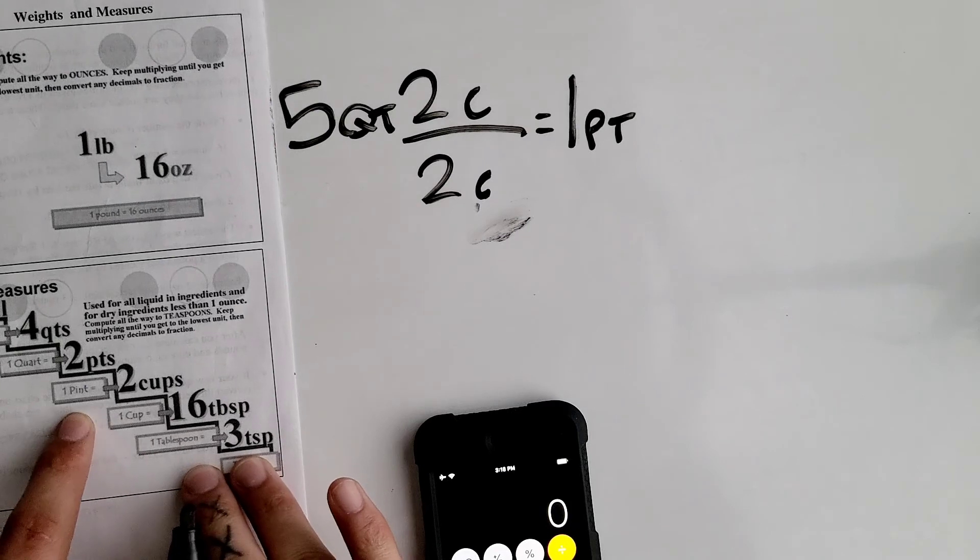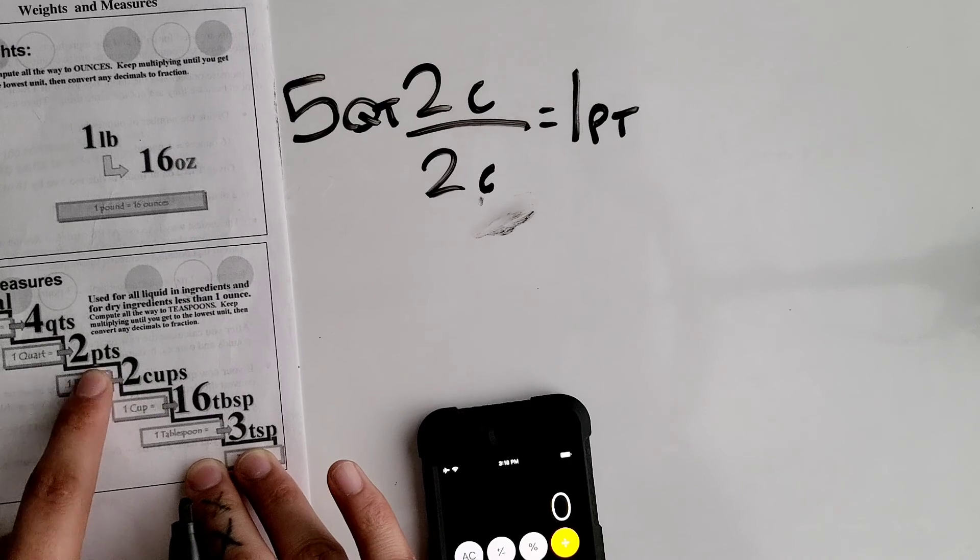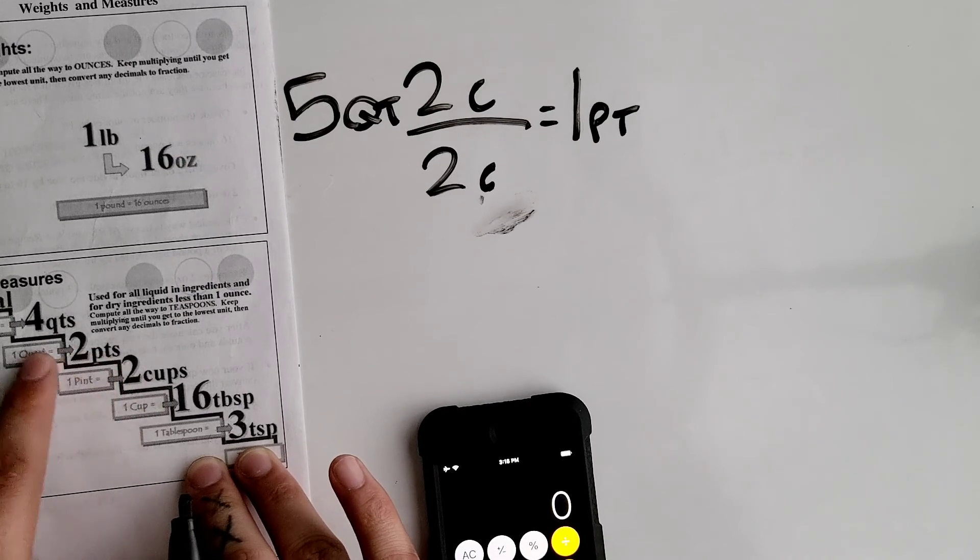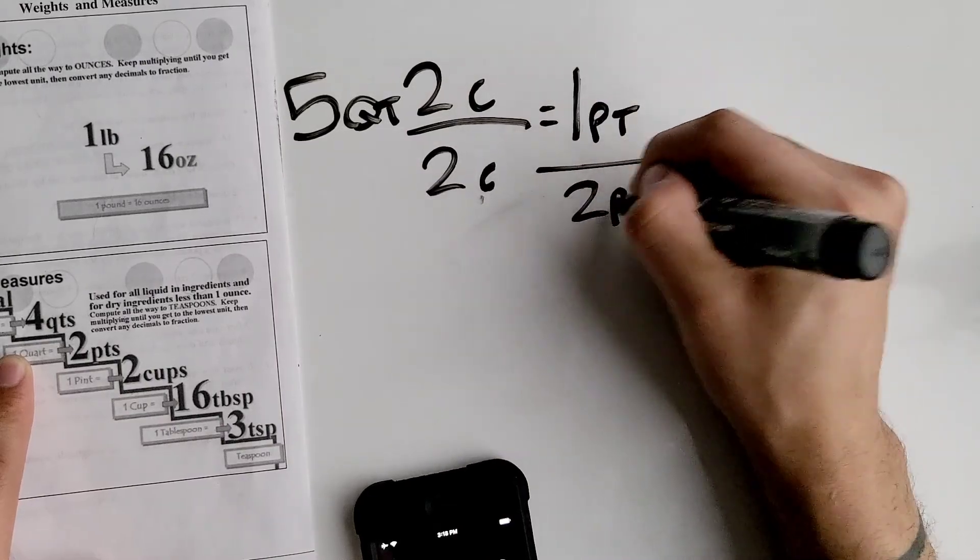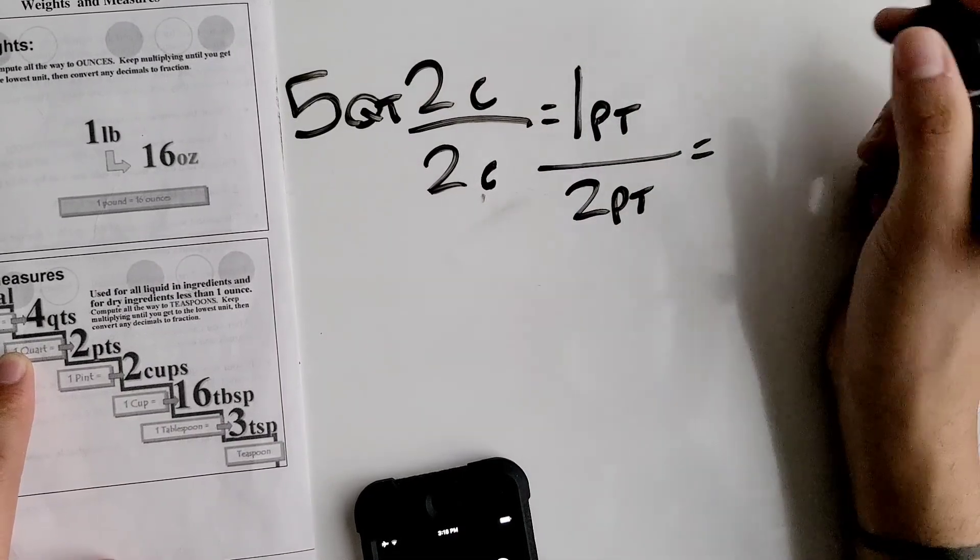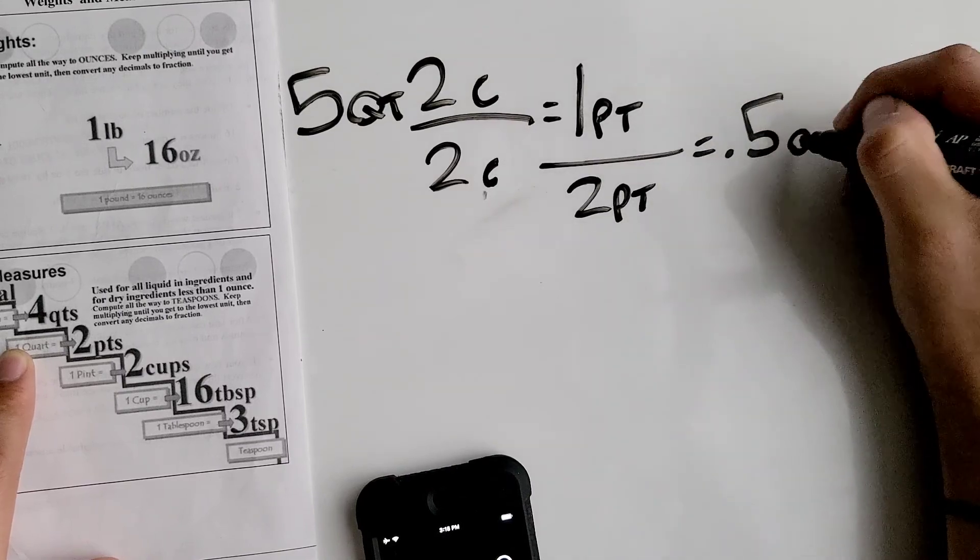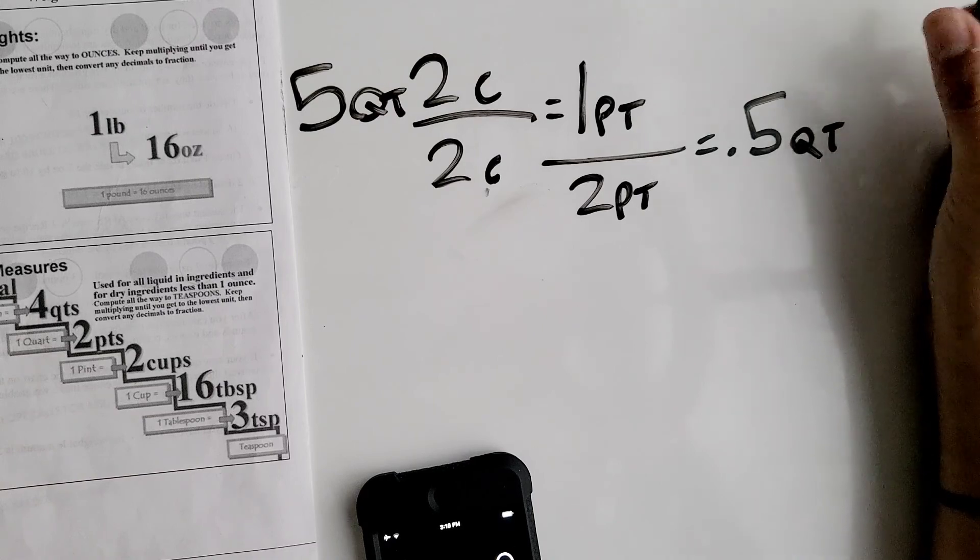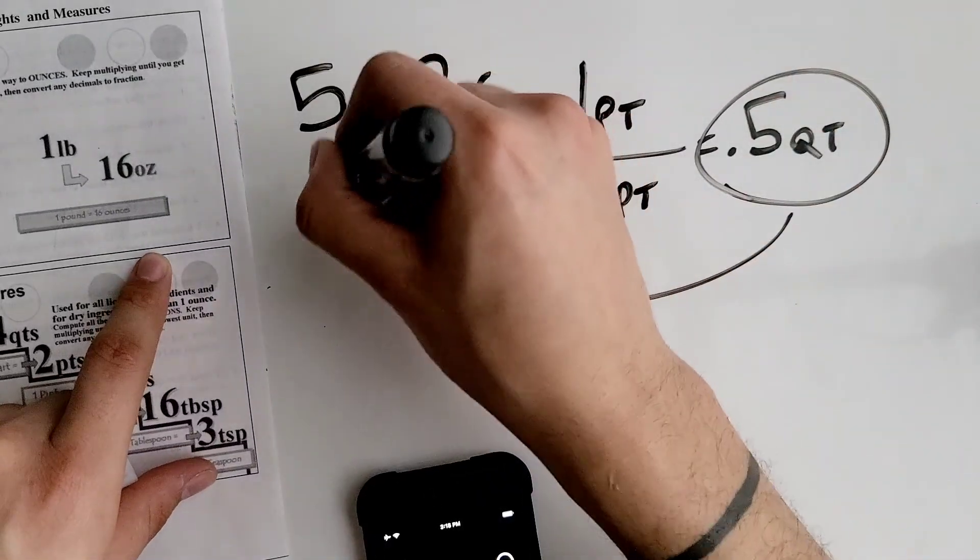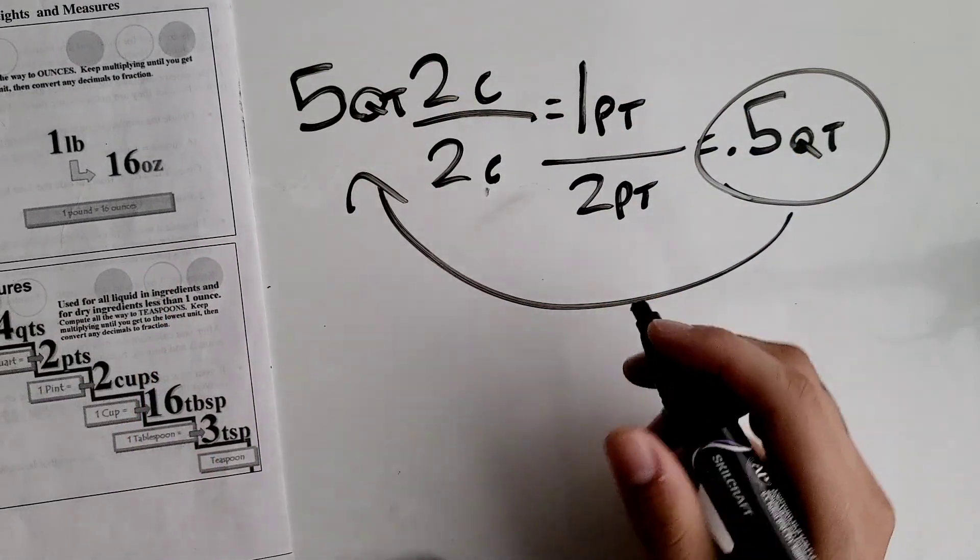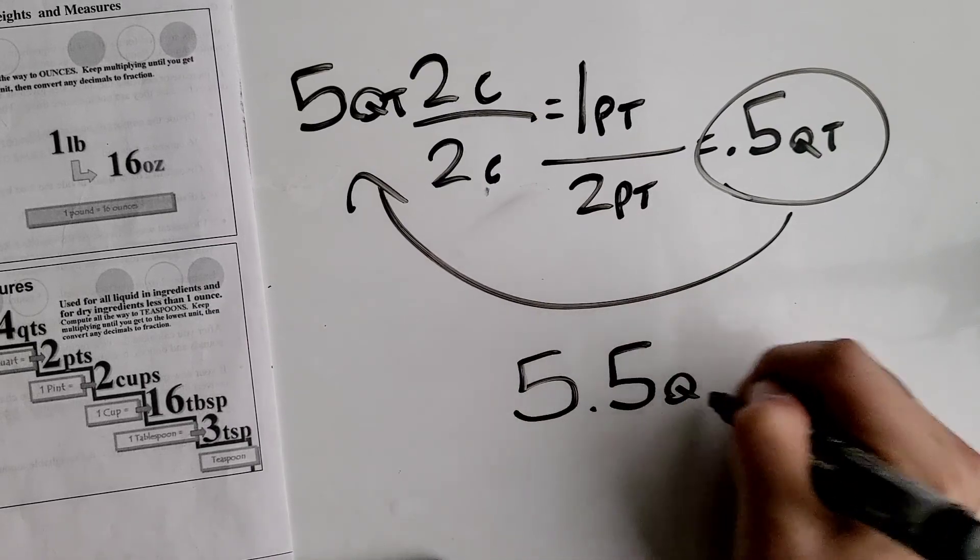We're at pints and we're trying to get to quarts, so we got one more step. We just have to divide it by 2 pints in order to convert it into quarts. Now that we have it in the same unit, we add these two together and that is the first step to your problem. Now you have 5.5 quarts.